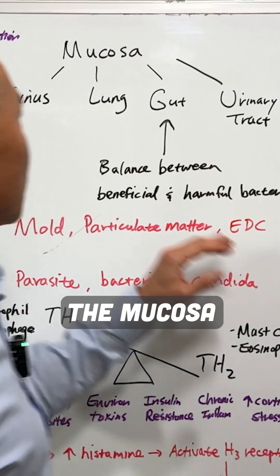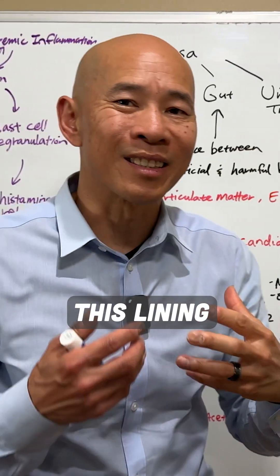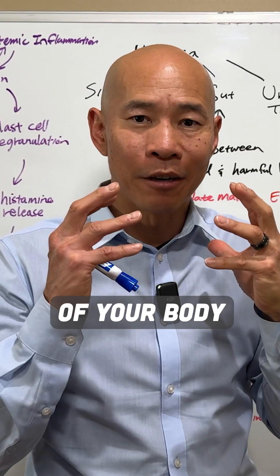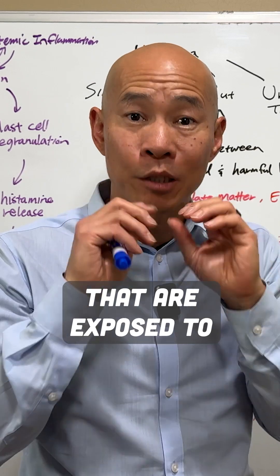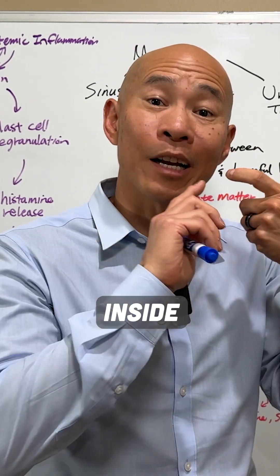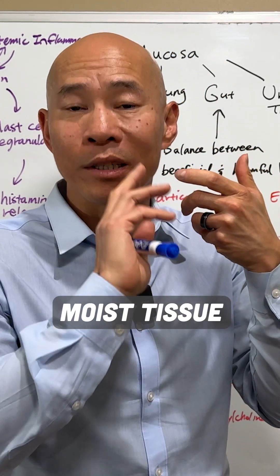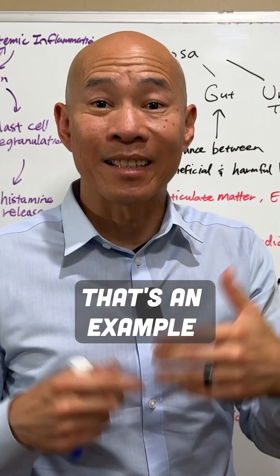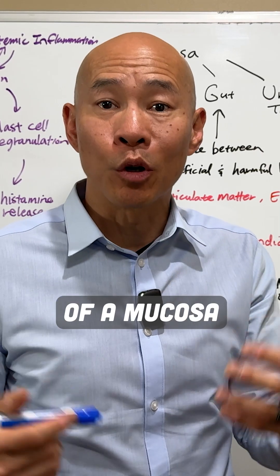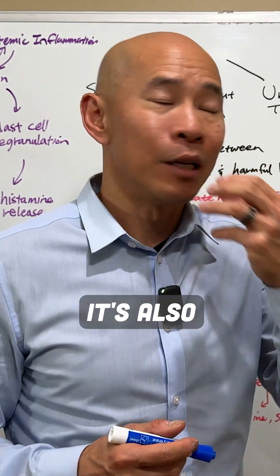Mucosal inflammation. The mucosa is describing this lining of your body that are exposed to the outside world. If you look inside your mouth, you're going to see this pink moist tissue. That's an example of a mucosa, a mucosal surface.